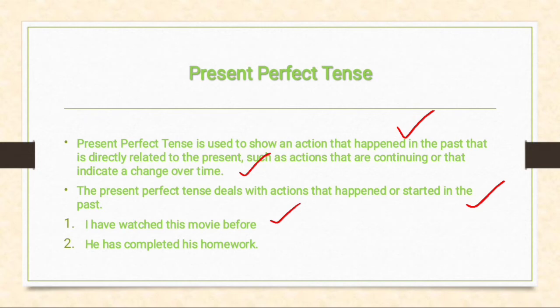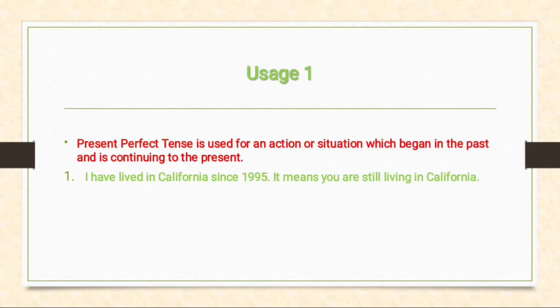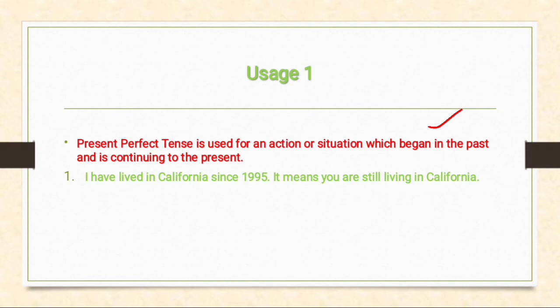For example: 'I have watched this movie before' means I performed this action before. 'He has completed his own work.' First usage of present perfect tense: it is used for an action or situation which began in the past and is continuing to the present. For example: 'I have lived in California since 1995' — meaning I am still living in California.